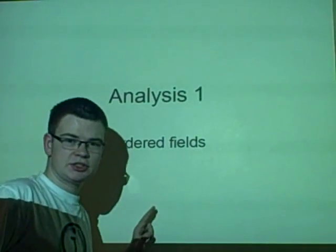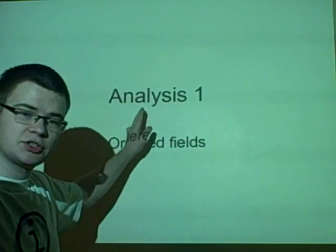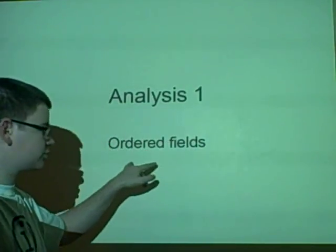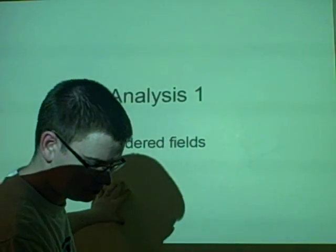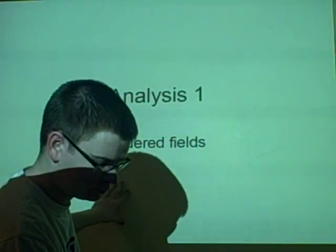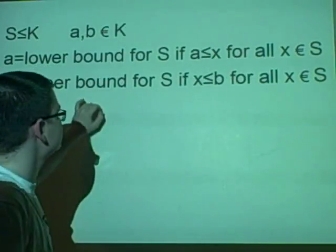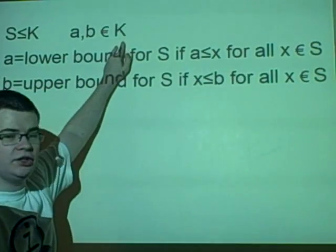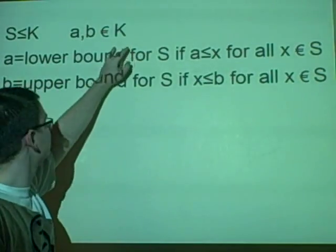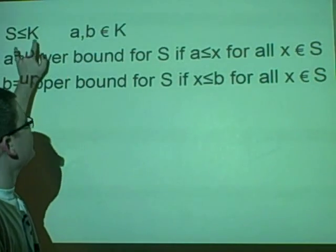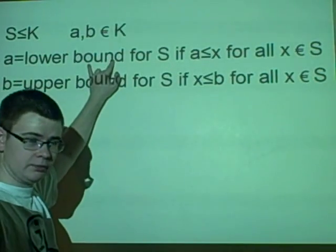This is the second lecture on Analysis 1, and it's on ordered fields. Say we have K as an ordered field, and S is a subset of K.